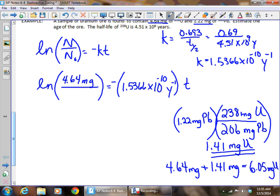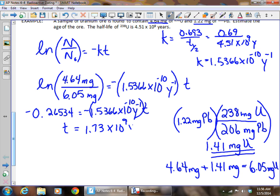So hopefully you followed that, that this is going to end up being the number of milligrams of uranium that was originally present in that rock sample, that ore that we were talking about. So now that we have this information, then it's just a matter of solving it. We take the natural log of this term. We end up with negative 0.26534. It's going to be equal to negative 1.5366 times 10 to the negative 10th reciprocal years times our time. And when we divide by that value, we end up with time being 1.73 times 10 to the 9th years. And that's the age of that ore sample.